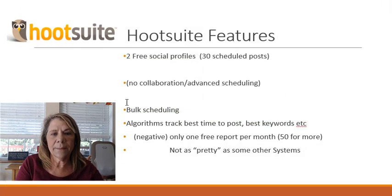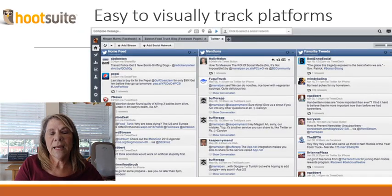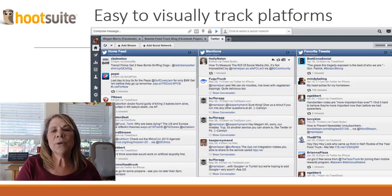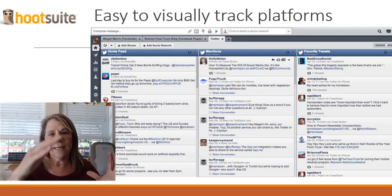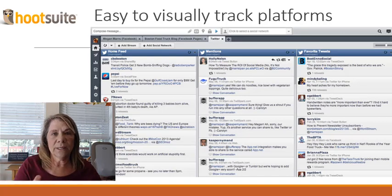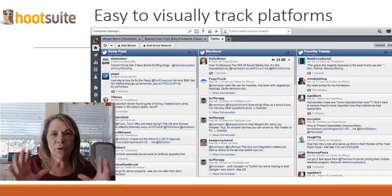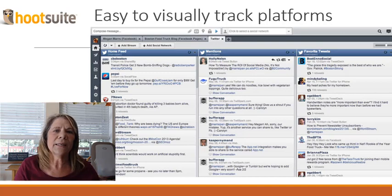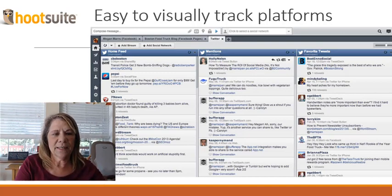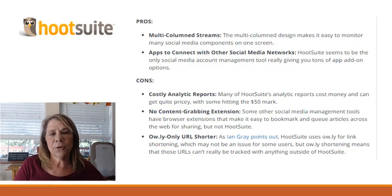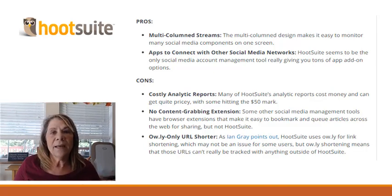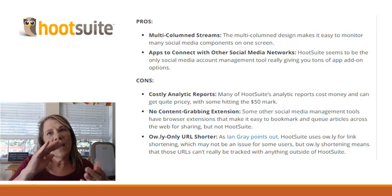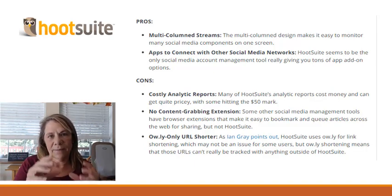One feature I really like about Hootsuite: I'm very visual, and I like how you can pull up all your different platforms at once and see visually what you're posting, what's coming up, and what it looks like from one platform to another. That multi-column stream view is a pro — not every social media management system has that. Some only let you click through individual views without seeing the whole month at a glance.